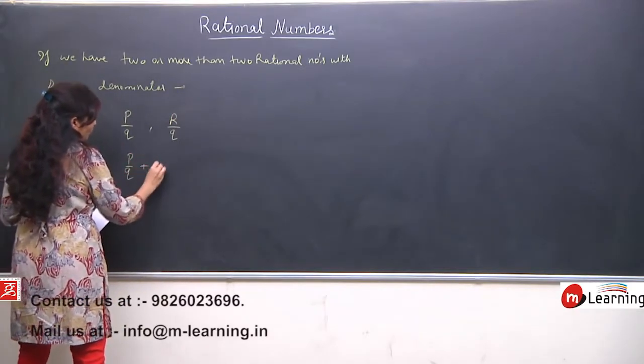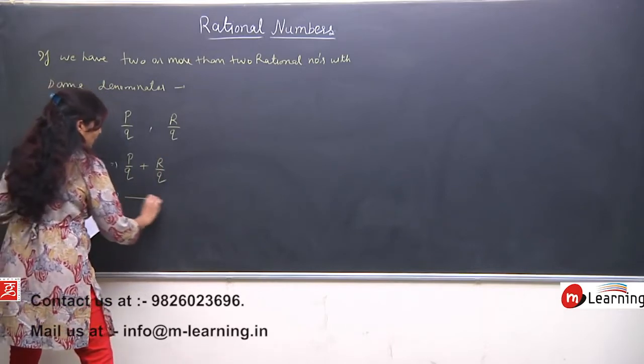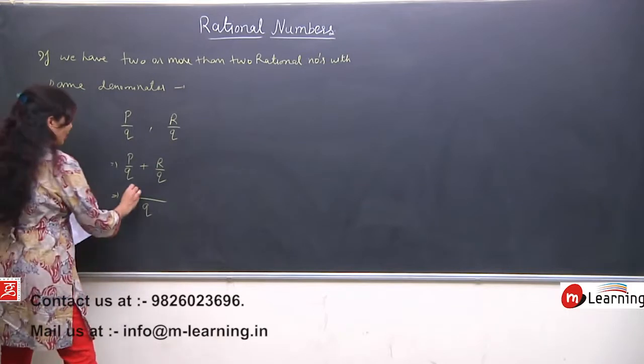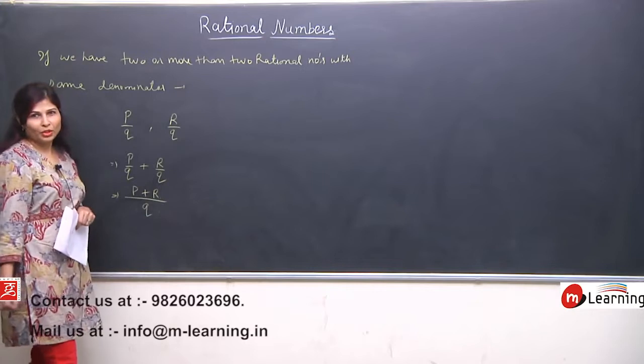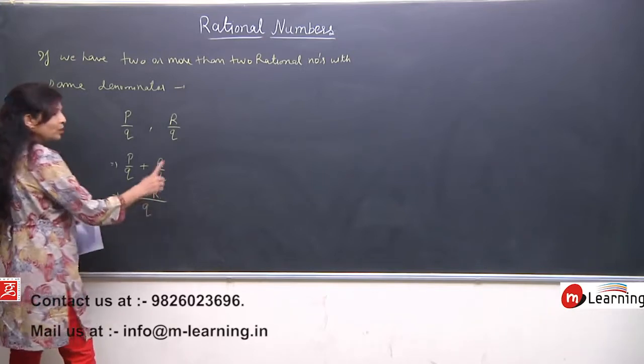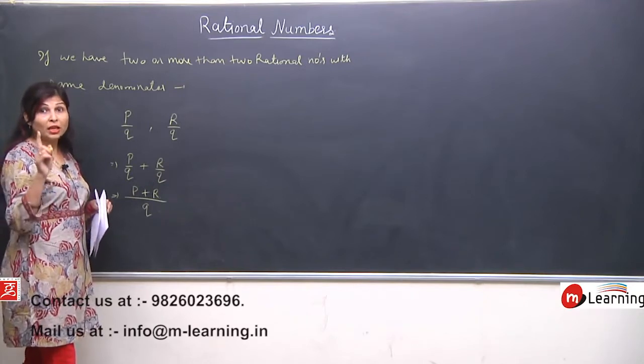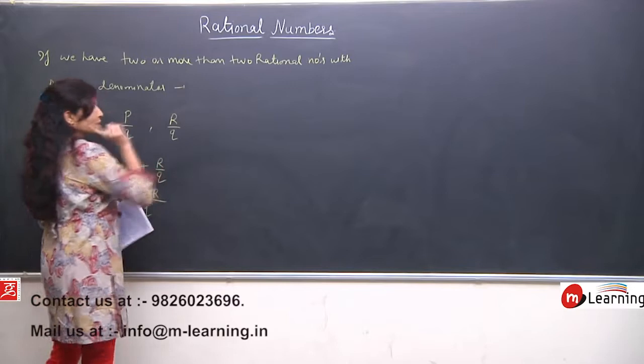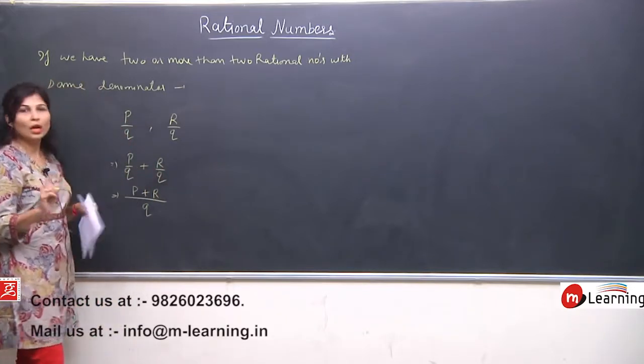P upon Q plus R upon Q. The LCM will be the same denominator and answer will be P plus R upon Q. This means we need to plus only the numerator, but in which case? If the denominators are same of all rational numbers, then only we have to plus the numerator.